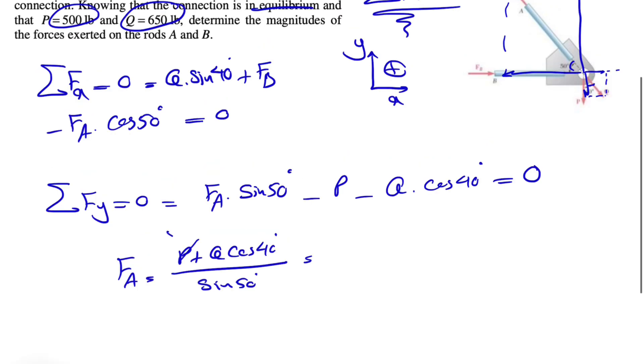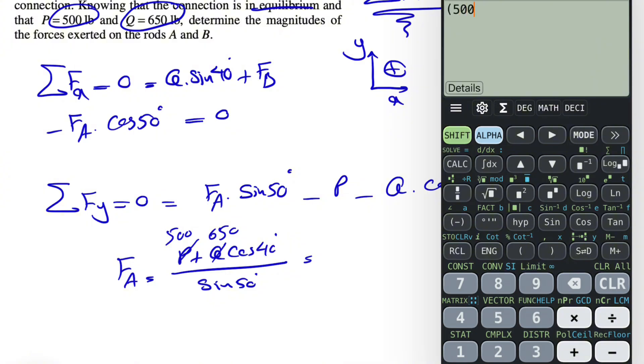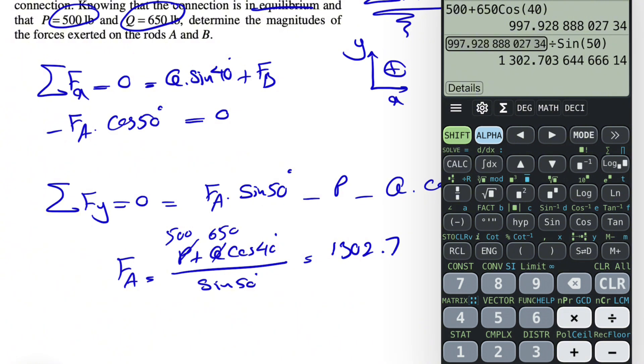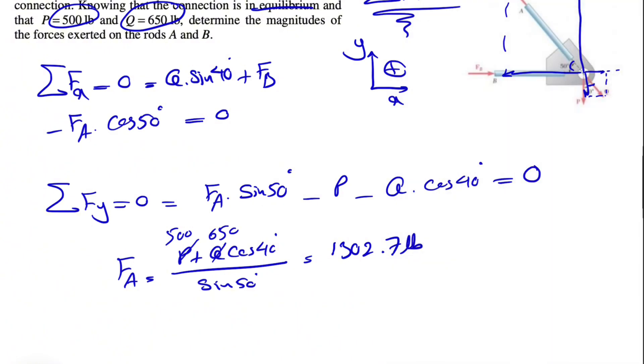And we know P is 500 pounds and Q is 650, so we should be able to find FA. So 500 plus 650 cosine of 40, and we're going to divide that by sine of 50. So our FA would be 1302.7 pounds.